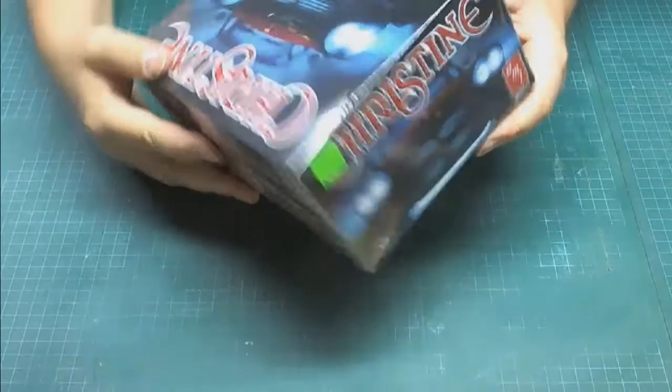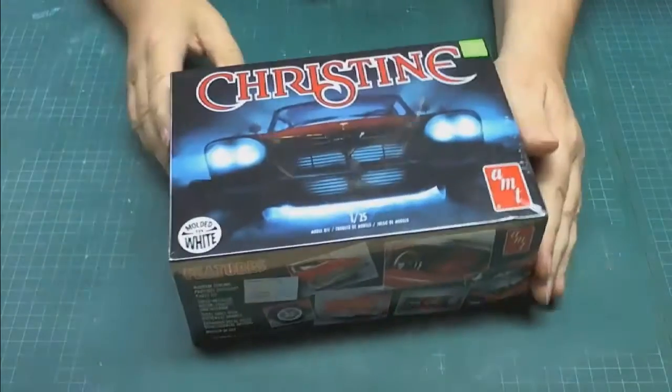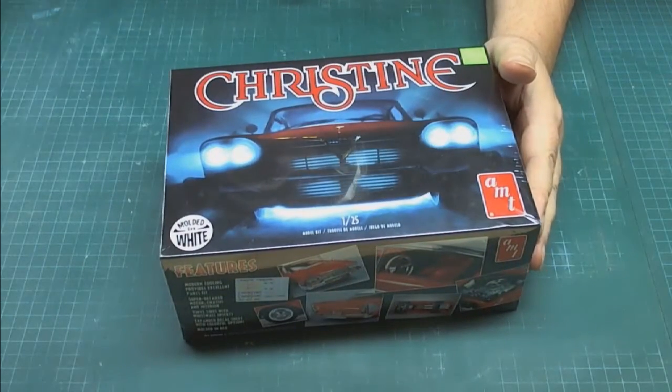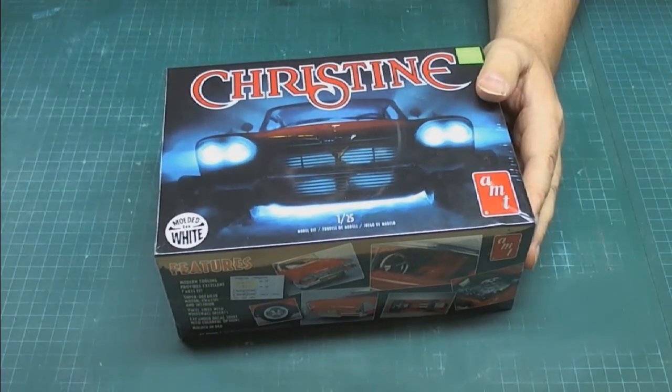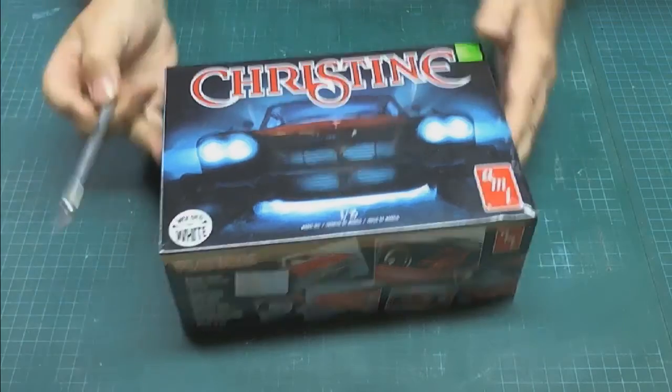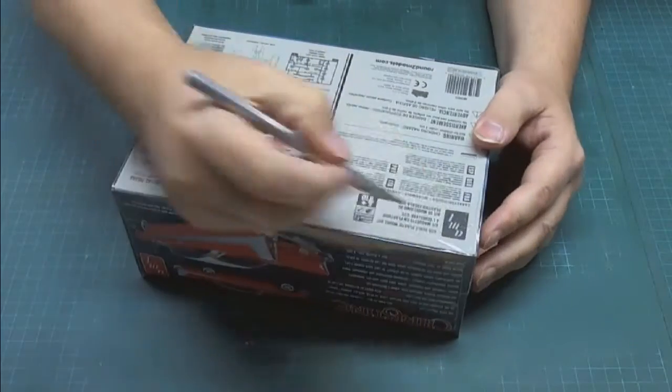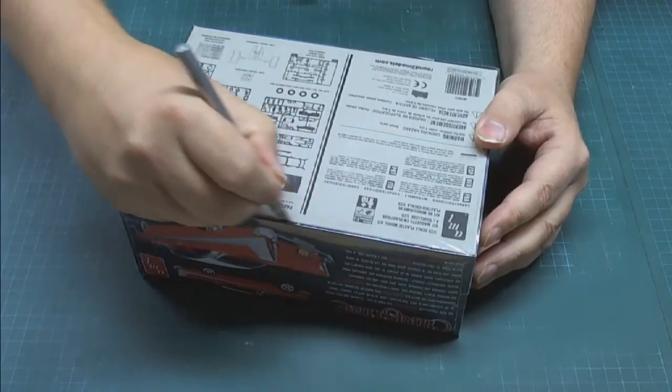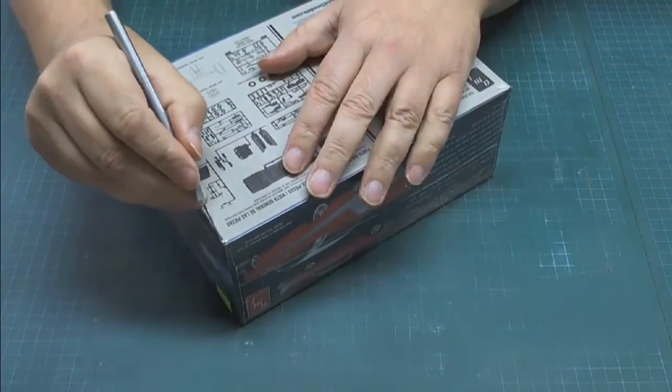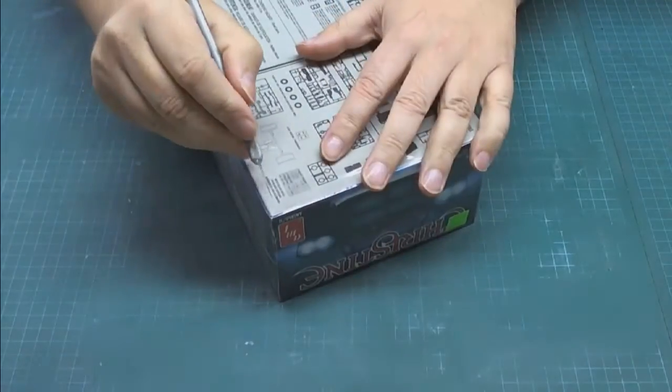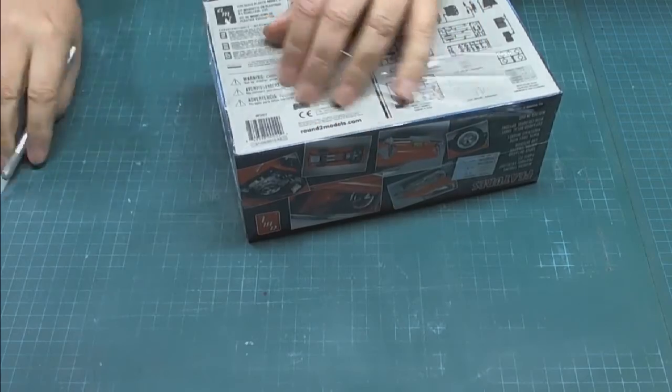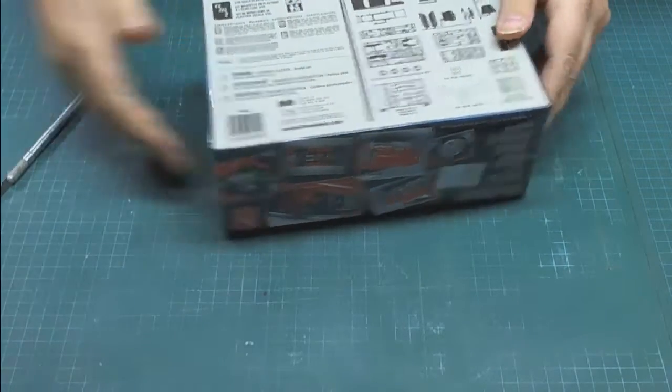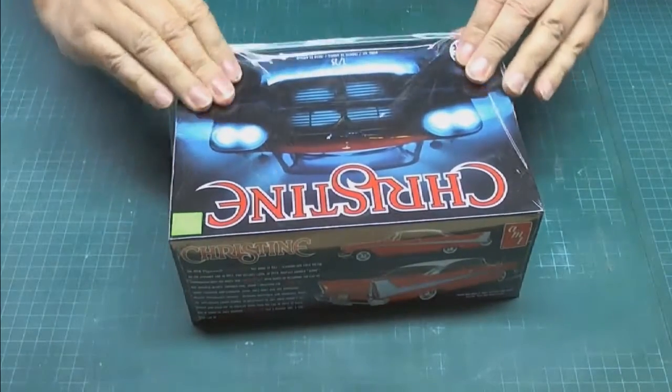And there we go, lots and lots. This one is molded in white. Let's find something to open this with. You never have a knife around when you need one. There's one right there. Okay, so we're just going to open this up, see what's inside. You always want to use a sharp knife when you're doing this and just cut through the cellophane.